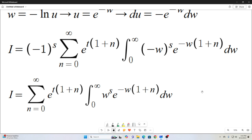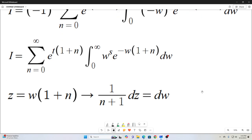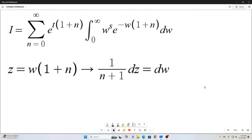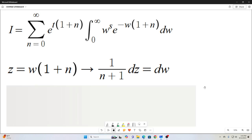All right. And the next step is yet another substitution. We're just, and this is a trivial substitution. We're just letting z equal to w times one plus n, because I want to make this e to the negative just some dummy variable. All right. That implies one over n plus one dz equals dw.